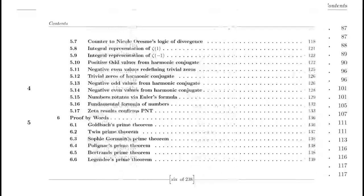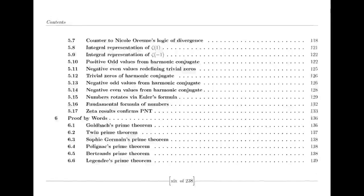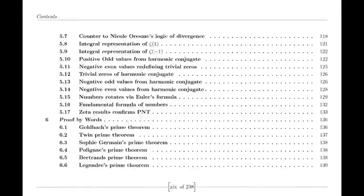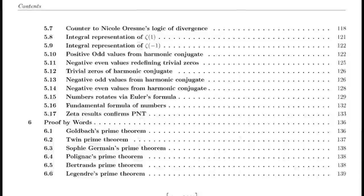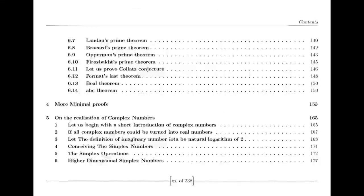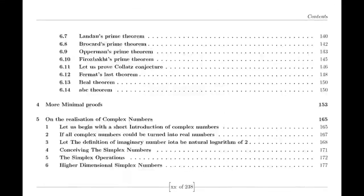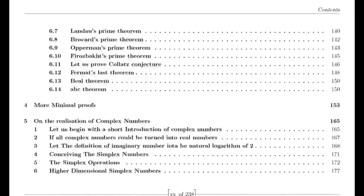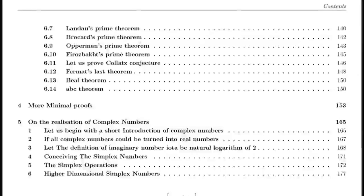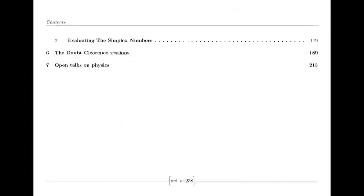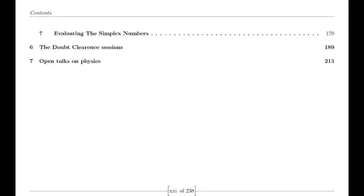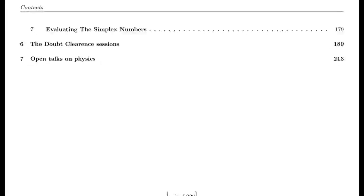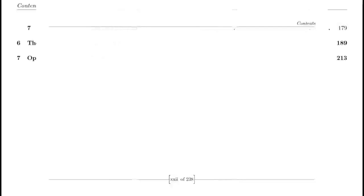Riemann was also influenced by the Dirichlet eta function, defined by an alternating series. This function is closely related to the zeta function and provides valuable insights into its behavior, particularly for values of s less than 1. The relationship between the eta function and the zeta function is encapsulated in a simple formula involving the gamma function and powers of 2, helping understand the zeta function's properties across different regions.